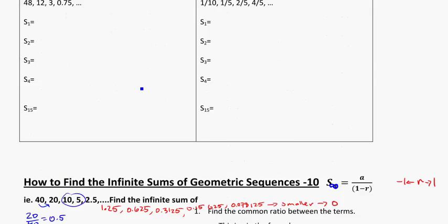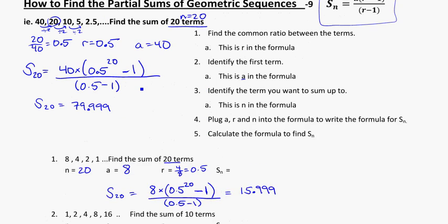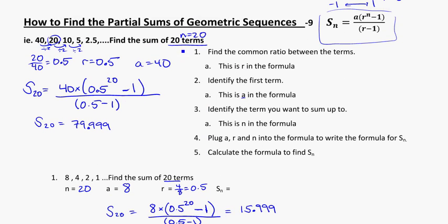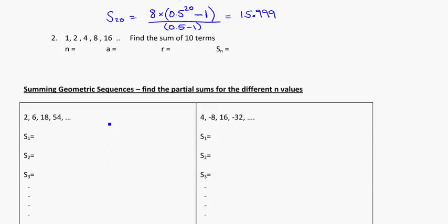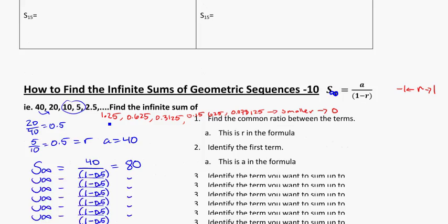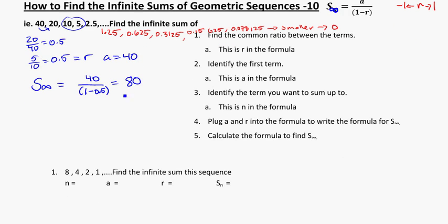Which actually kind of makes sense, because when we added the first 20 terms, looking back up at the first example here from the last video, same sequence, we added the first 20 terms, we got to 79.9999. Because the numbers start getting smaller and smaller and smaller, after 20 terms we're at 79.99, all the way up to infinity you'll even out to 80. The sum for all the terms possible in this sequence, because it's decreasing, is 80.